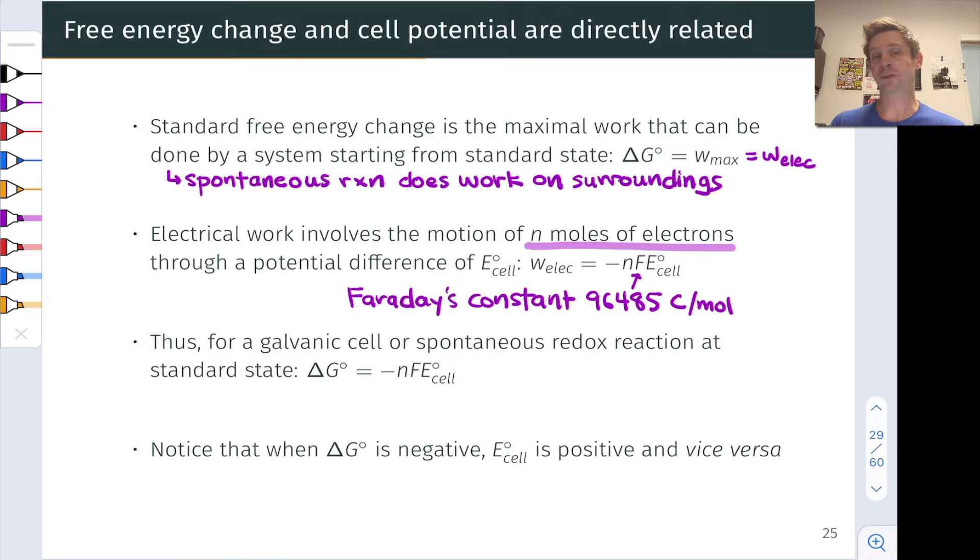Now n moles of electrons have a charge in Coulombs that corresponds to the charge in Coulombs of a mole of electrons times n, the number of electrons involved. And that charge in a mole of electrons is constant - it's the elementary charge times Avogadro's number. And this has a value known as Faraday's constant, and it's 96,485 Coulombs per mole. We'll use this number a lot in converting from cell potentials to free energy change and vice versa.